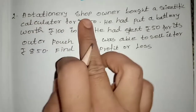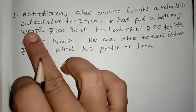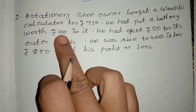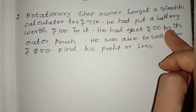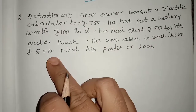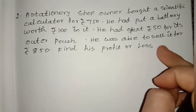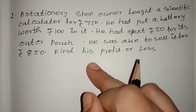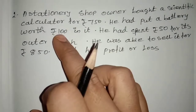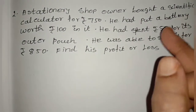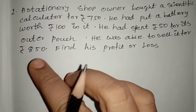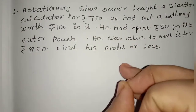Second sum: a stationary shop owner bought a scientific calculator for rupees 750. He put a battery worth rupees 100 in it and spent rupees 50 for its outer pouch. He was able to sell it for rupees 850. Find his profit or loss.